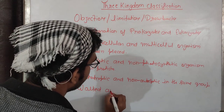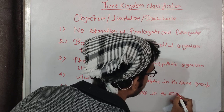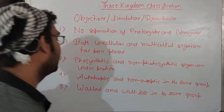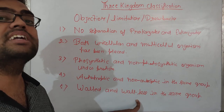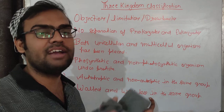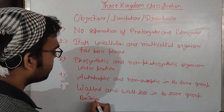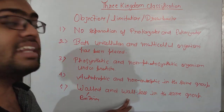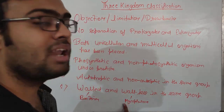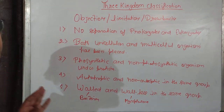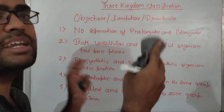The fifth drawback is that walled and wallless organisms were placed in the same group. Walled organisms, for example bacteria, have a cell wall made up of peptidoglycan. Wallless organisms, for example Mycoplasma, don't have a cell wall. So Haeckel placed all walled and wallless organisms together under Protista.